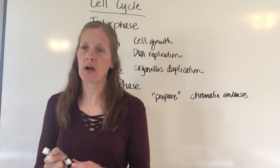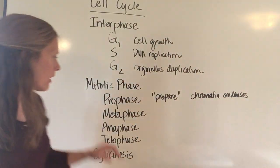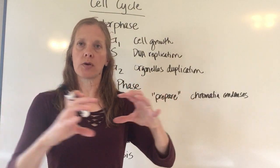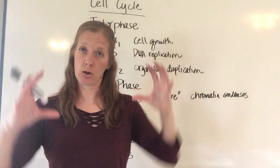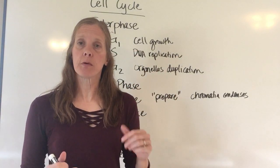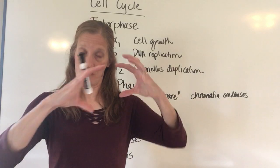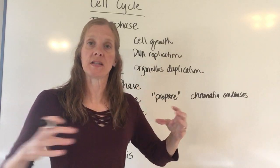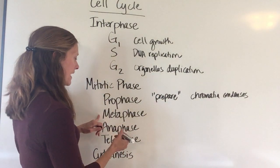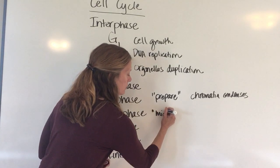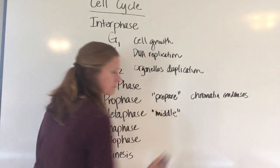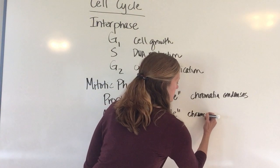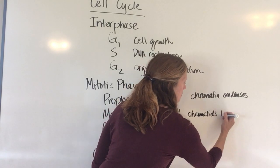In metaphase, all of those chromatids line up along the equatorial plane. Think about a globe — the cell kind of looks like a big globe — and in metaphase they're all going to be lined up across the middle. The M in metaphase stands for middle, and the chromatids are all lined up.